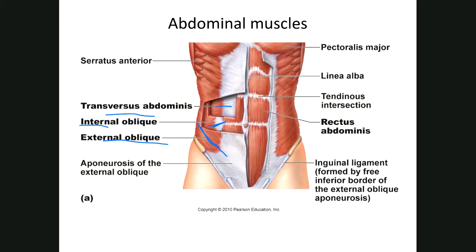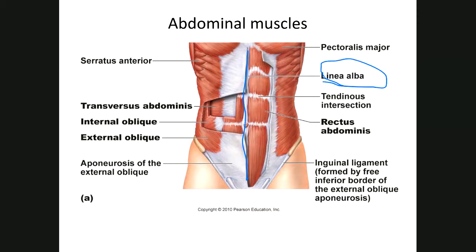Rectus means up and down along a plane, so this is your rectus abdominis. There is some variation in exactly how this works — I've seen patients opened up for surgery where the transversus abdominis goes all the way to the linea alba, some where it crosses, some where it ends earlier. Generally, these should all meet at the linea alba, which means 'white line' — linea is line, alba is white.